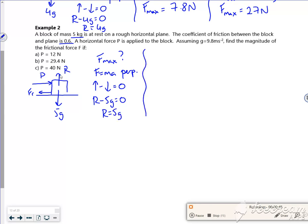So my F max now is mu R, and it tells me that mu is 0.6 times 5G, so that gives me 29.4 newtons for the friction, for F max.